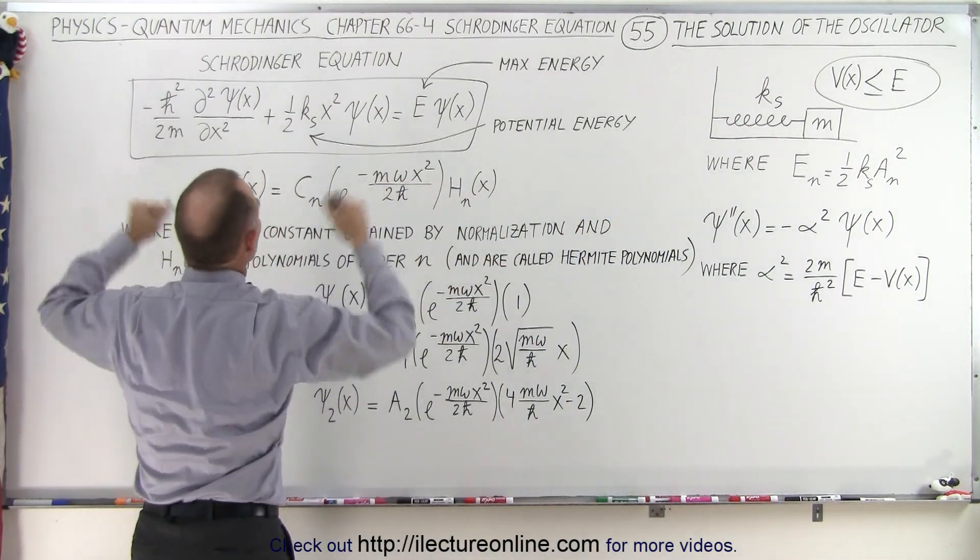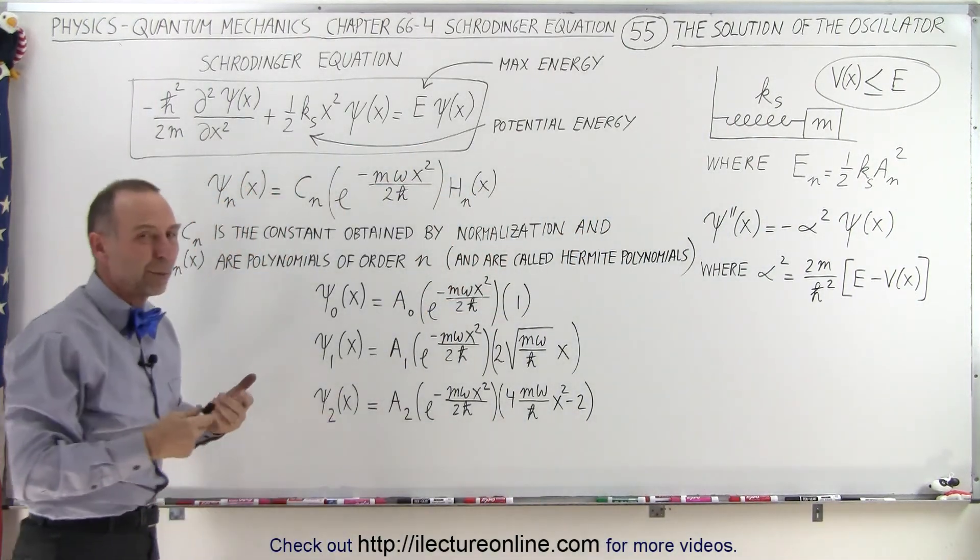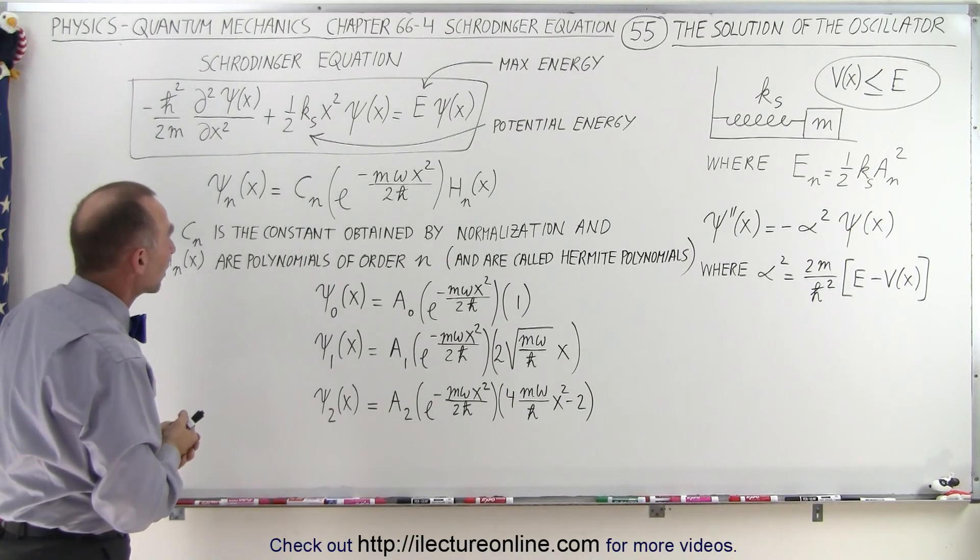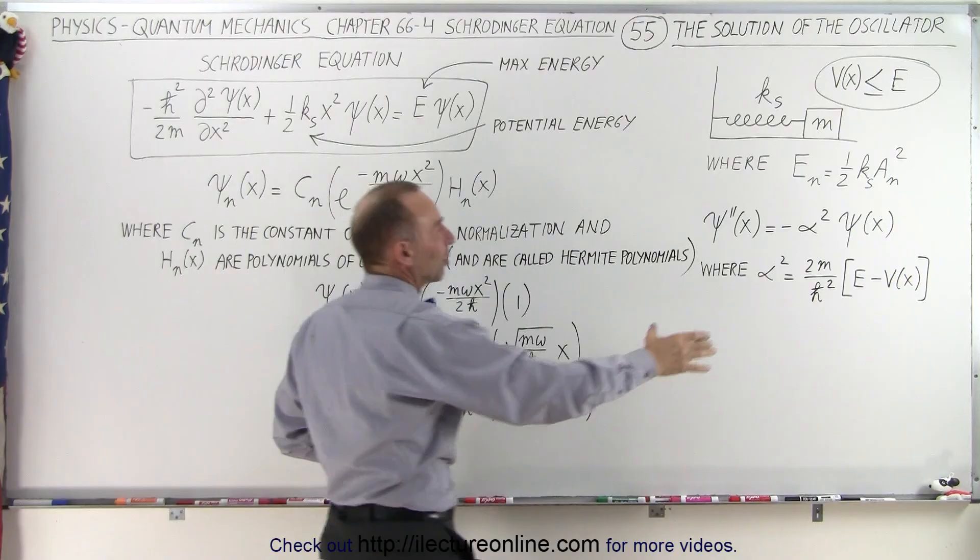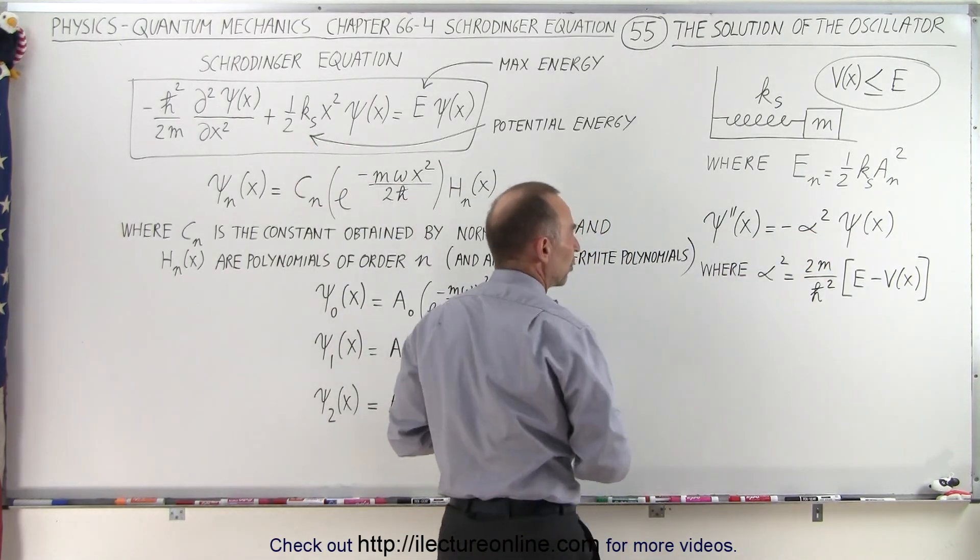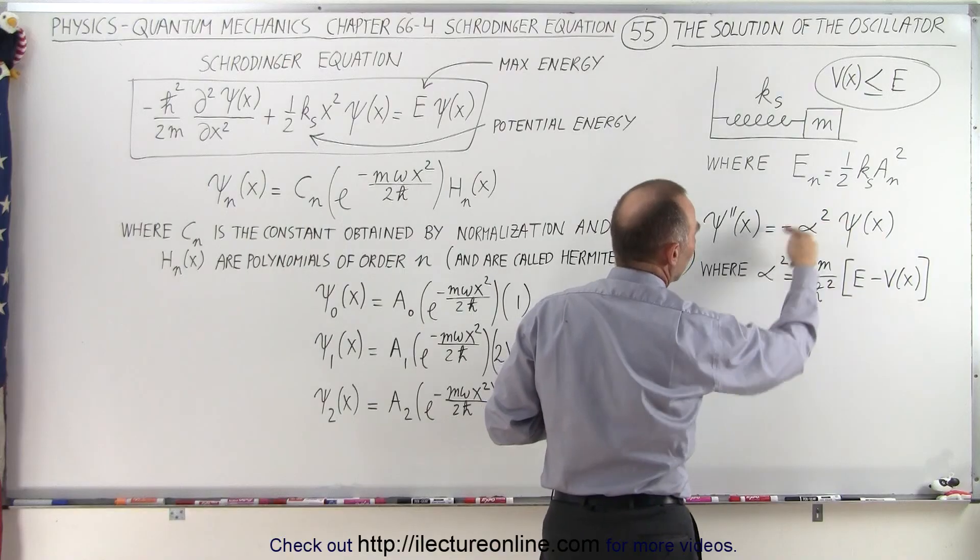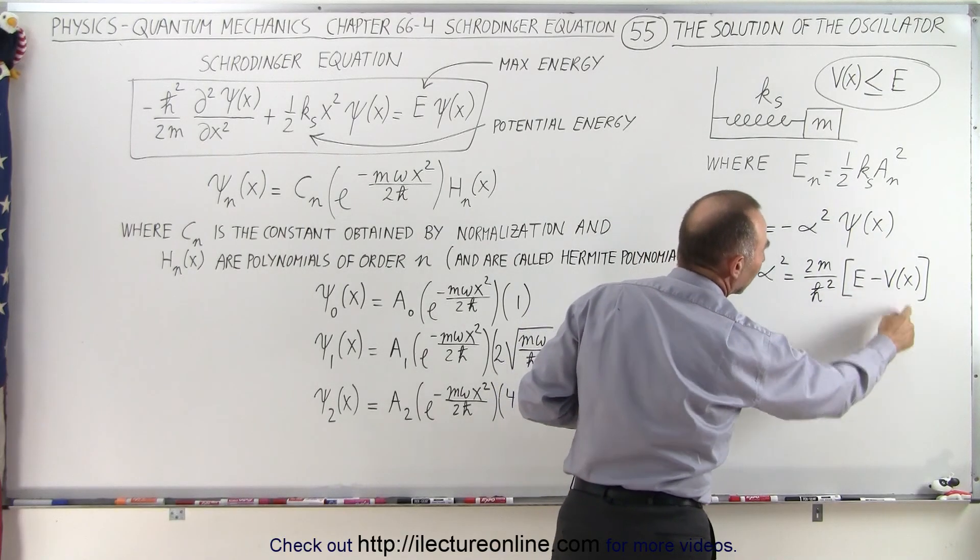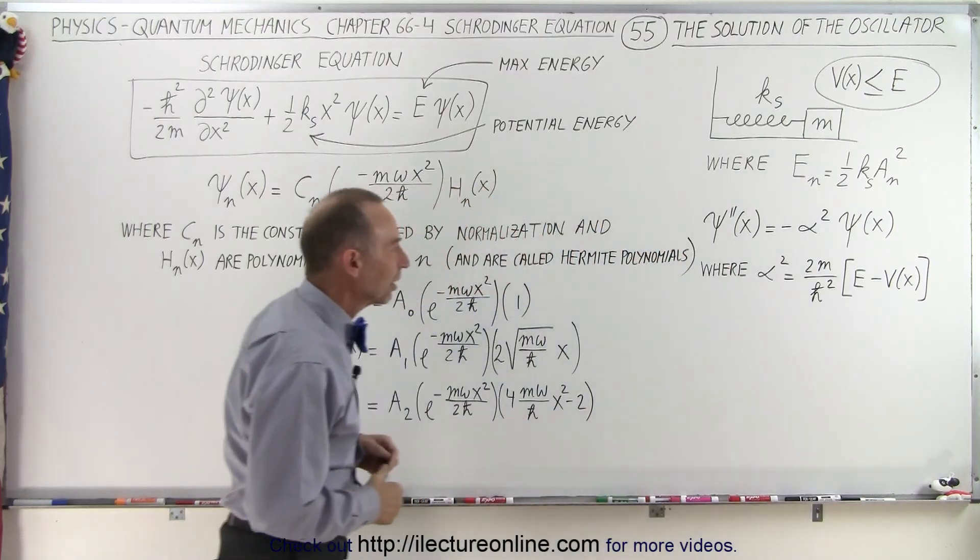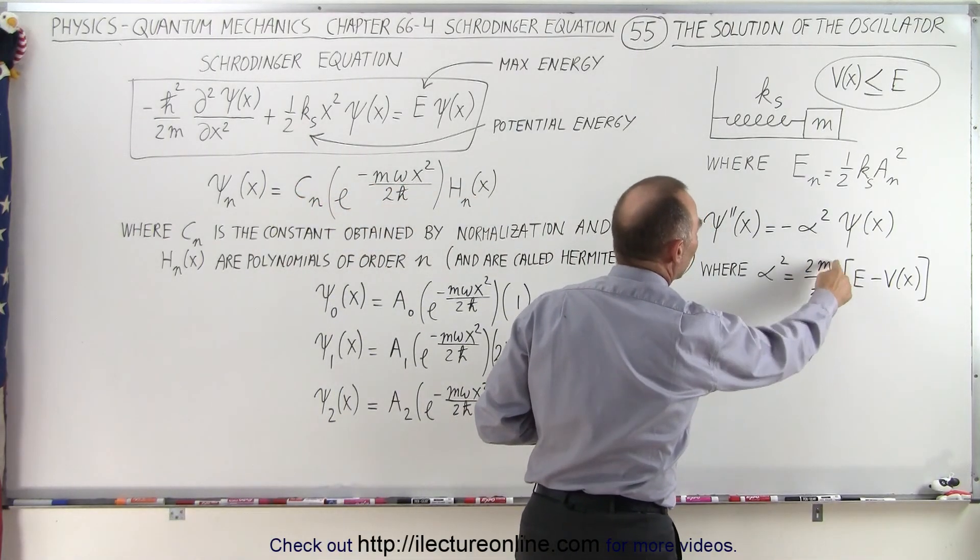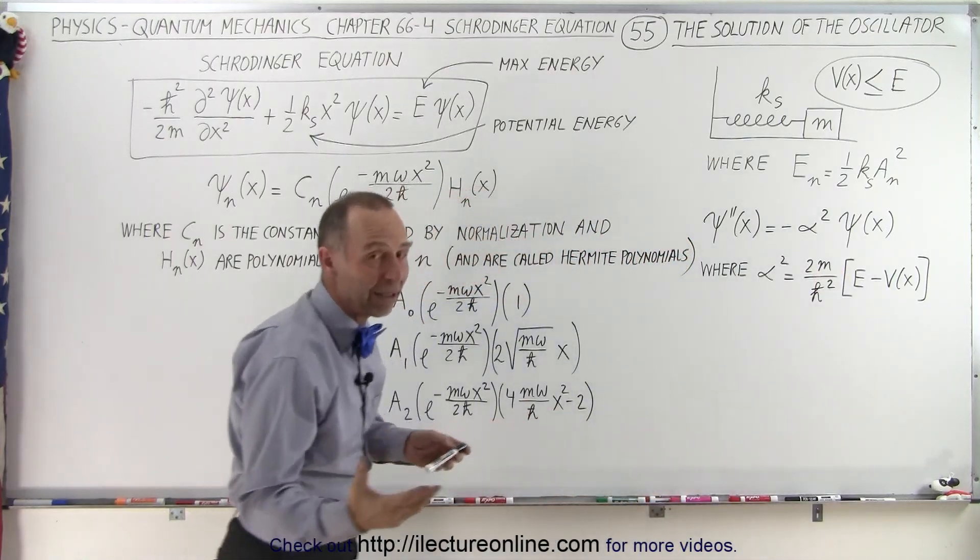Here we have the Schrodinger equation of the simple harmonic oscillator. Here we have the simple format of that equation. These are equal to one another as we've shown you before. The alpha squared is defined here, where the total energy is greater than or equal to the potential energy of the oscillator. We still have 2m and h-bar, m being the reduced mass or the mass of the oscillator.